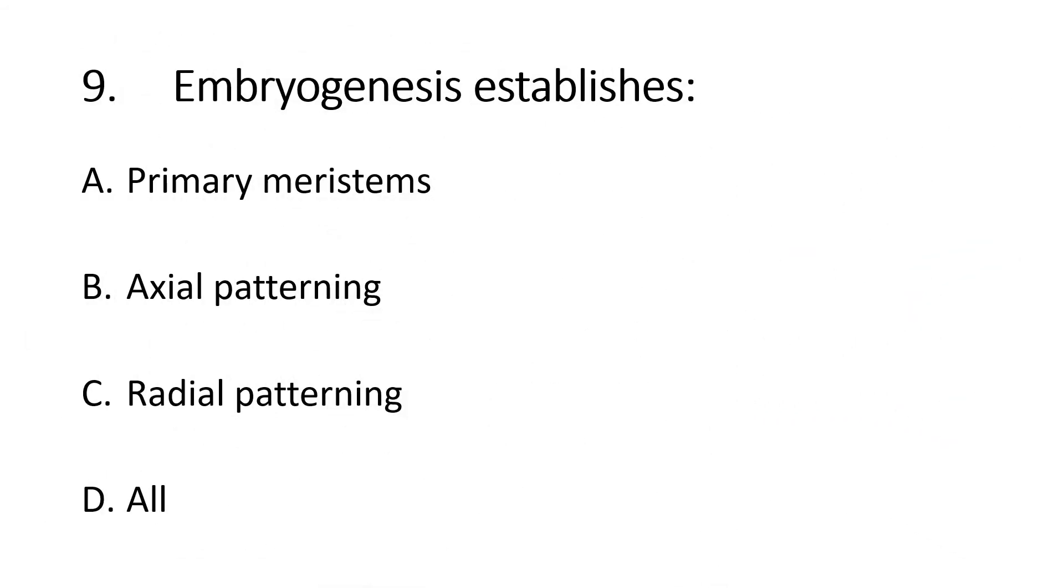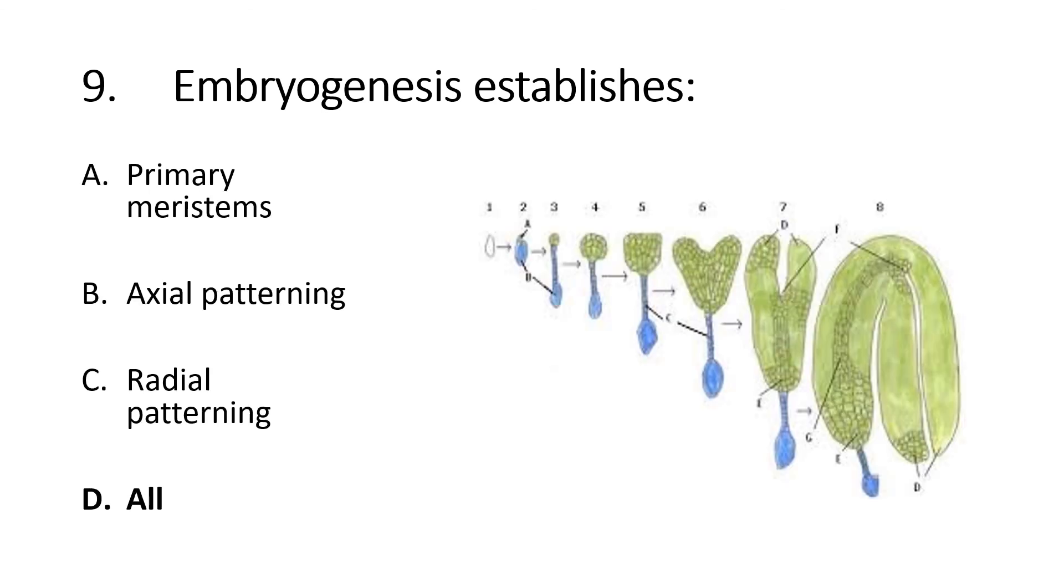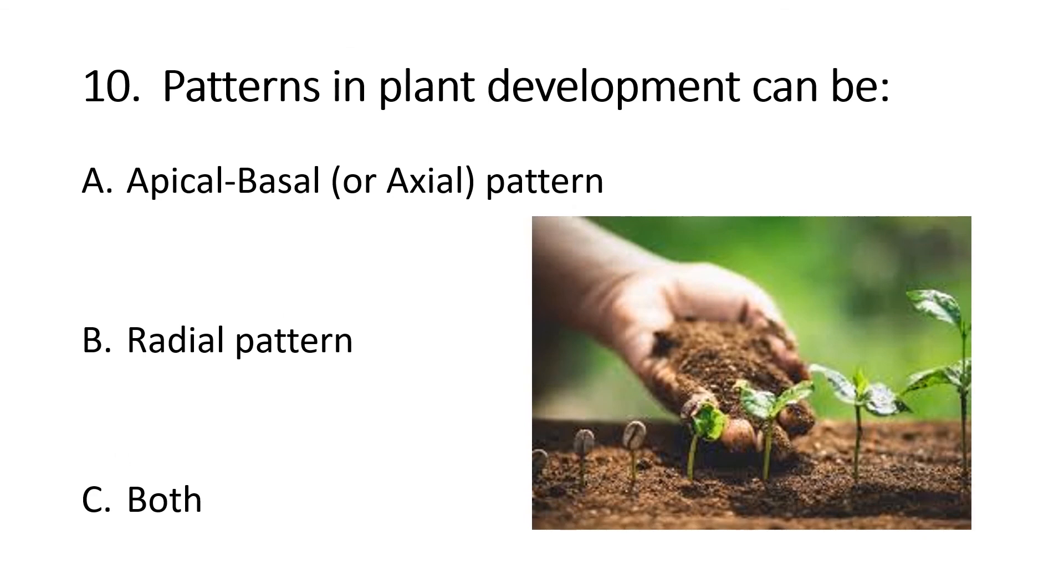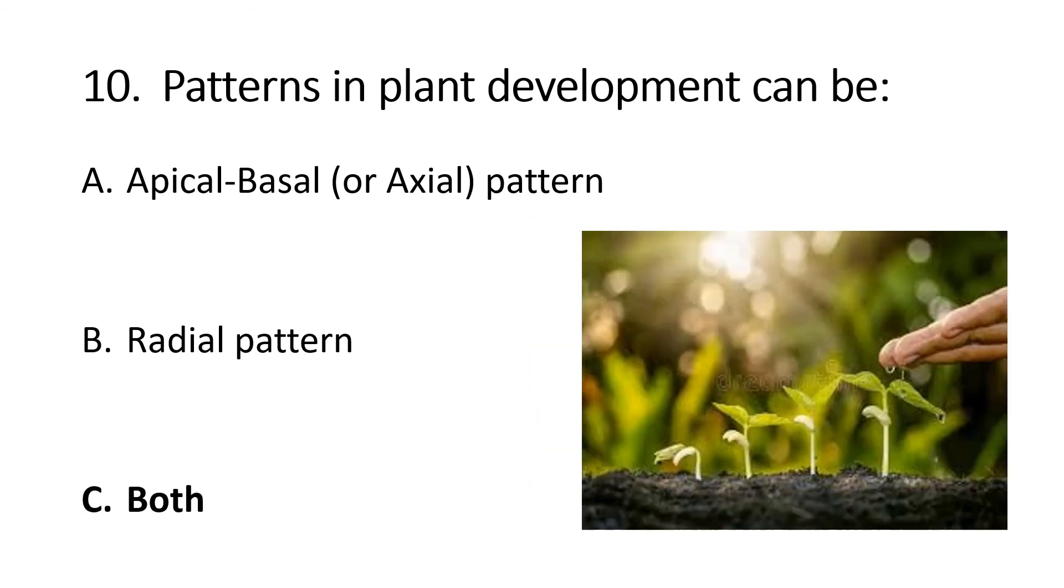Embryogenesis establishes the patterns. Options are alpha primary, beta axial pattern, charlie radial patterning, delta all. For embryo and plant development, two patterns work. One is apical-basal or axial patterning, and the other pattern is radial pattern. The right answer is definitely charlie, both. That was all about today's lecture.